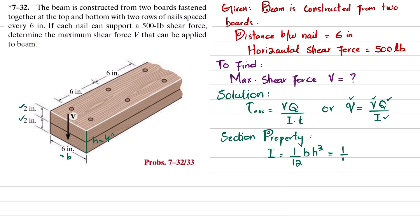Height h is equal to 4 inches because 2 plus 2 is 4. So we will put the value: 1 over 12, b is 6, and height is 4 cubed. When you solve this you will get I is equal to 32 inch to the fourth power.